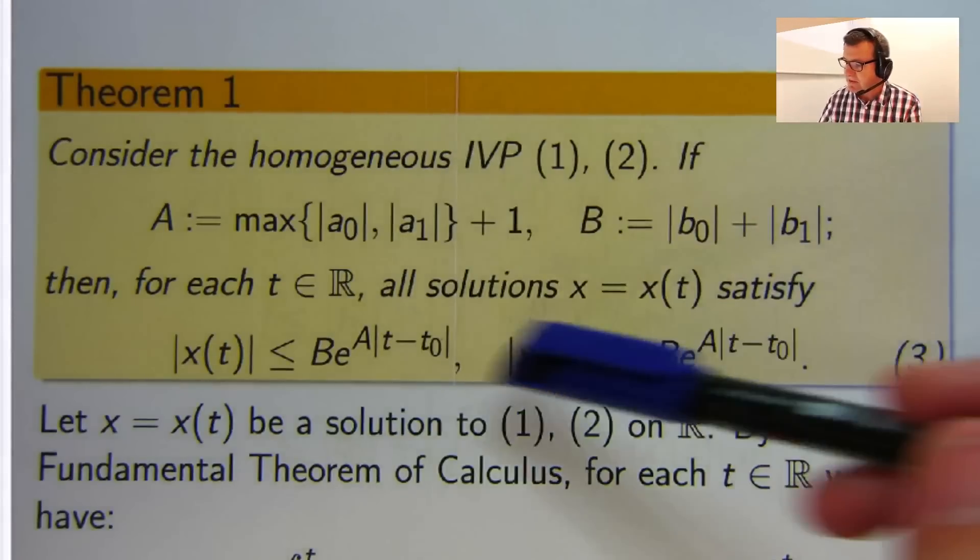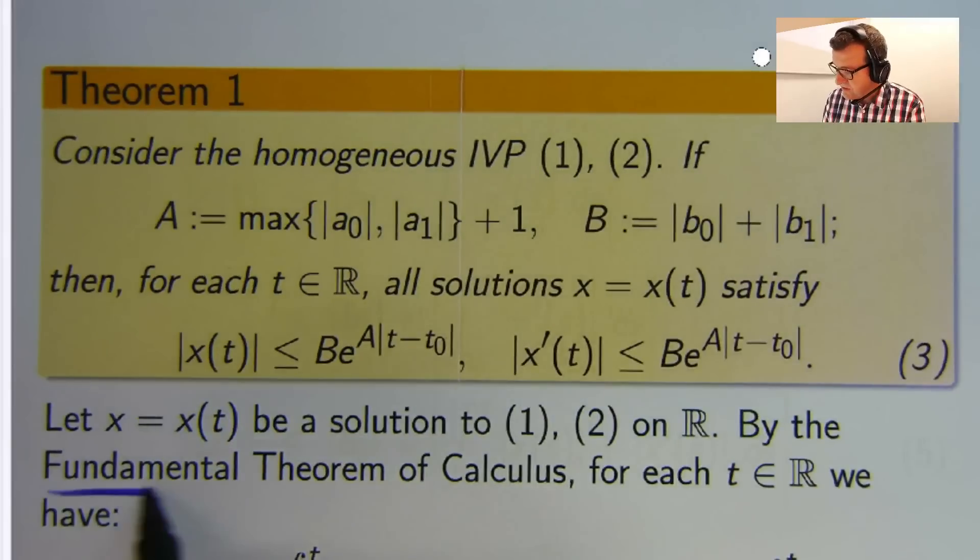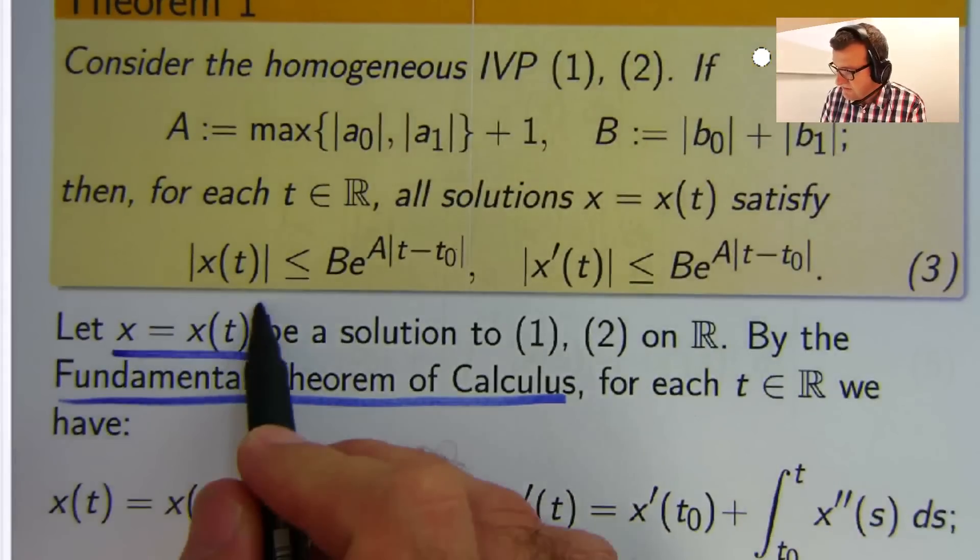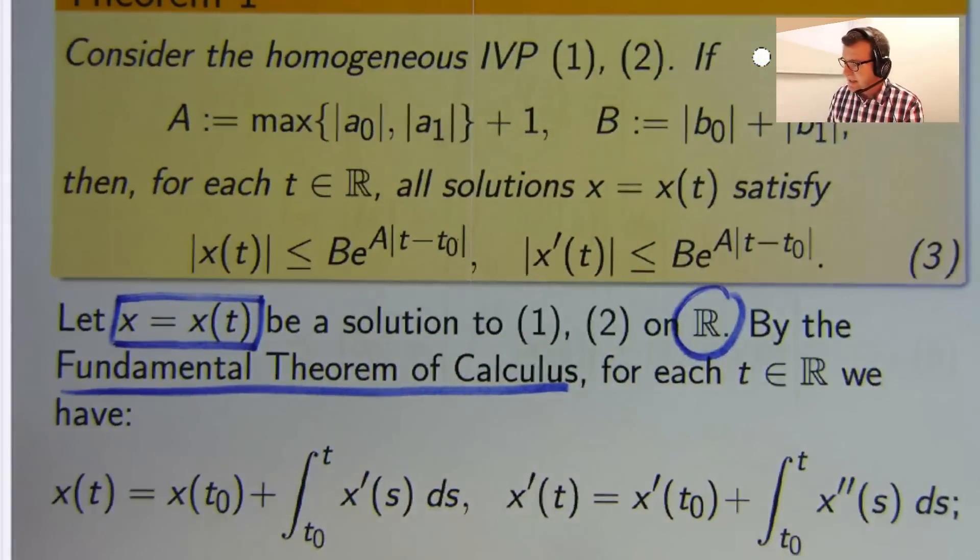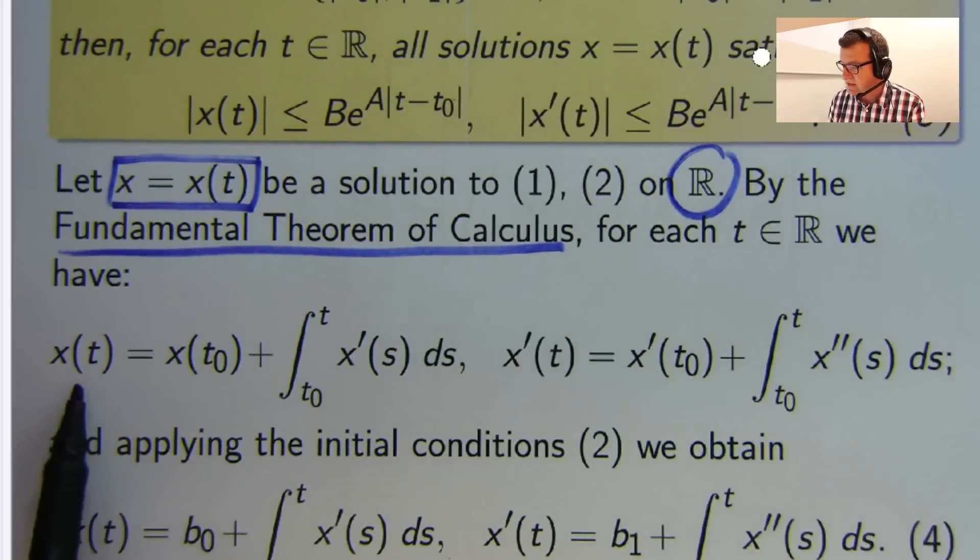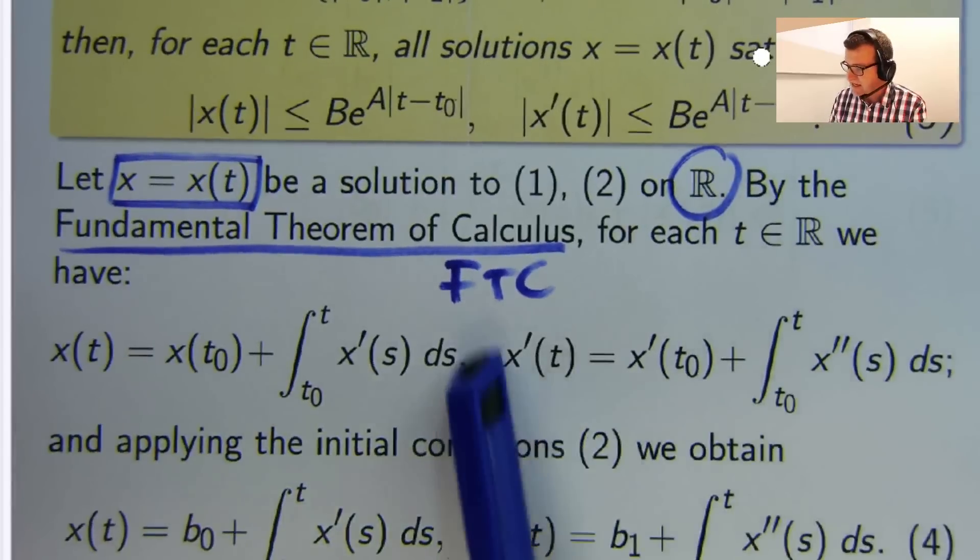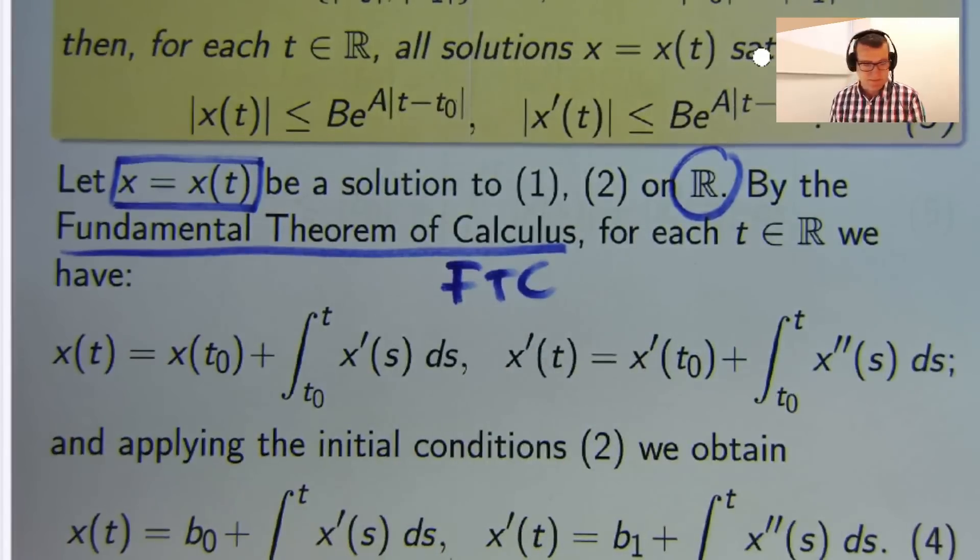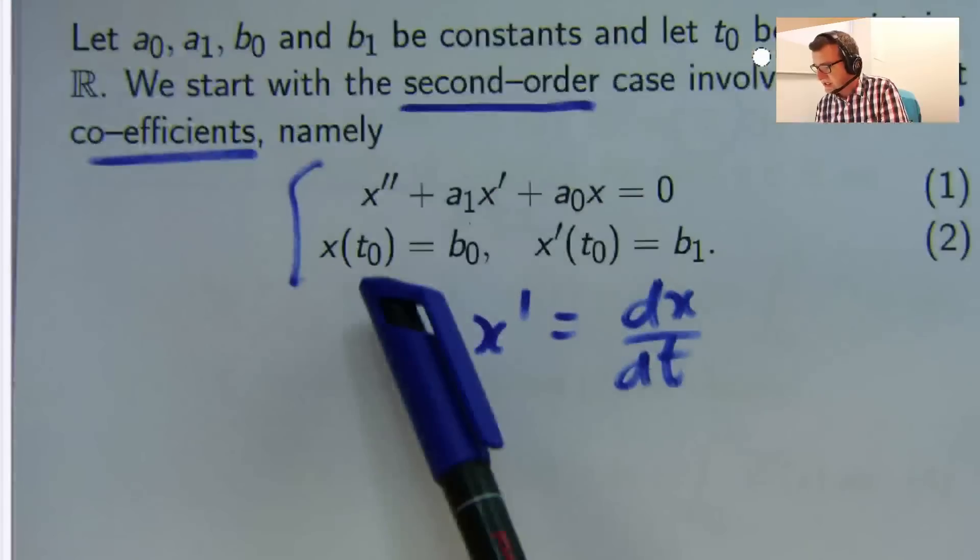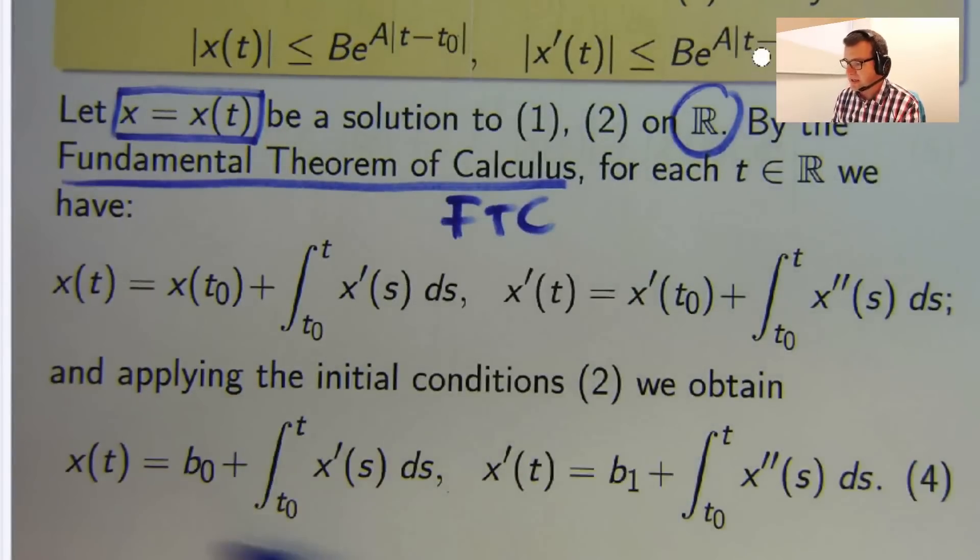So how do we come up with these bounds? Well, I am glad you asked. Let me unpack that a little bit more. Well, let's start off using the fundamental theorem of calculus. So we assume that we have a solution x on the whole real line. Let's write x and x prime in terms of an integral. The fundamental theorem of calculus, or the FTC, tells us x can be written this way. And similarly, x dash, or x prime, can be written this way. If we employ the initial conditions from equation (2), we can replace this with b0 and this with b1. So we're going to do something with these two integral expressions now.